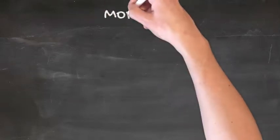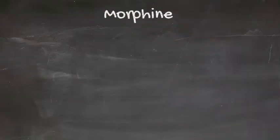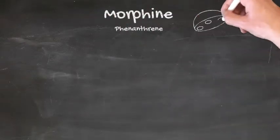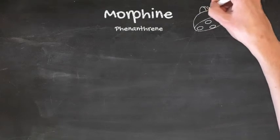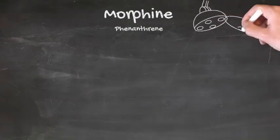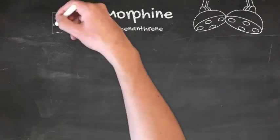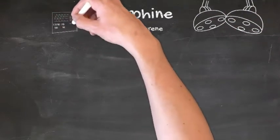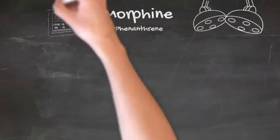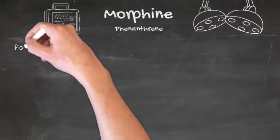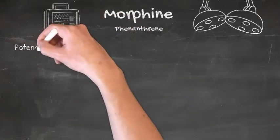Hopefully you'll already be reasonably familiar with morphine. Morphine is a naturally occurring opiate with activity at both the mu and kappa opioid receptors. It belongs to the phenanthrene group of opioids, along with codeine and buprenorphine.